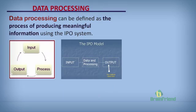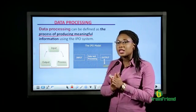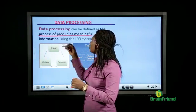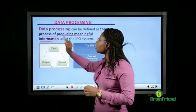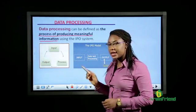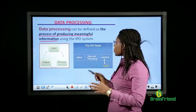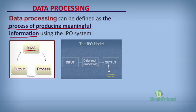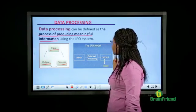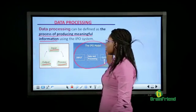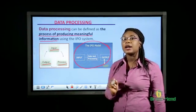What is data processing? Data processing can be defined as the process of producing meaningful information. That's the process at which you get data and then you give out meaningful information — it's called data processing. And we use the IPO system to achieve this. The IPO system is the input, process, output model used to achieve data processing.